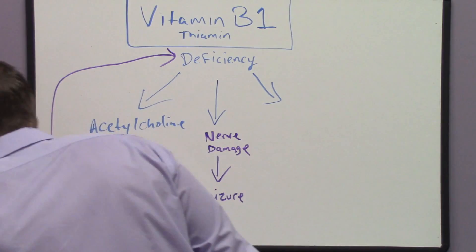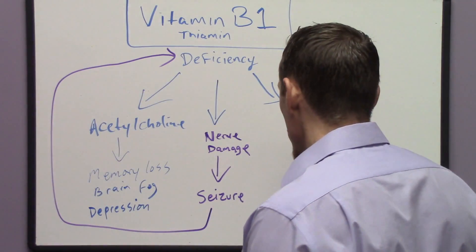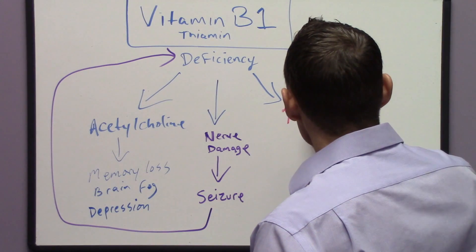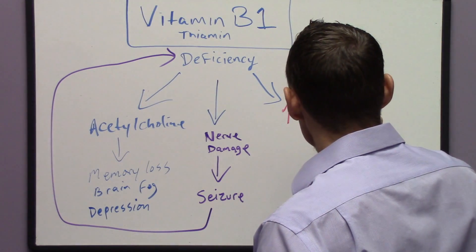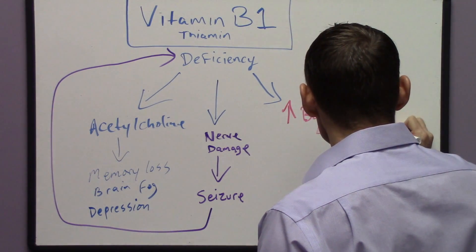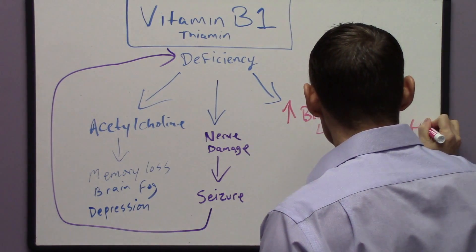One of the other parameters or components to vitamin B1 deficiency that's actually quite common is it will affect blood levels of a couple of different chemicals we call lactate and pyruvate. Now, these are molecules necessary...